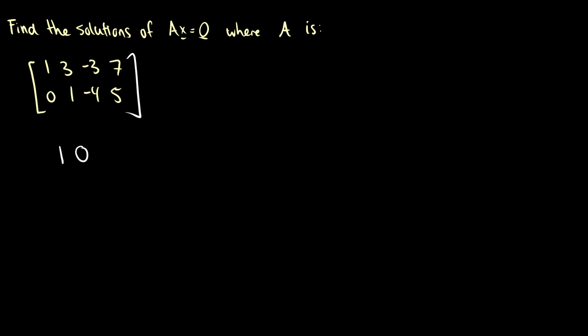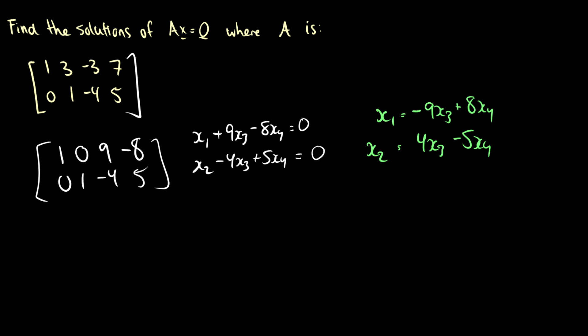So we're going to get 1, 0, -3 minus 3 times -4. That's going to be -3 plus 12, which is 9. Then we have 7 minus 15, which is -8. And the bottom row stays the same. So here's what's interesting. We now have that x1 plus 9x3 minus 8x4 is equal to 0.